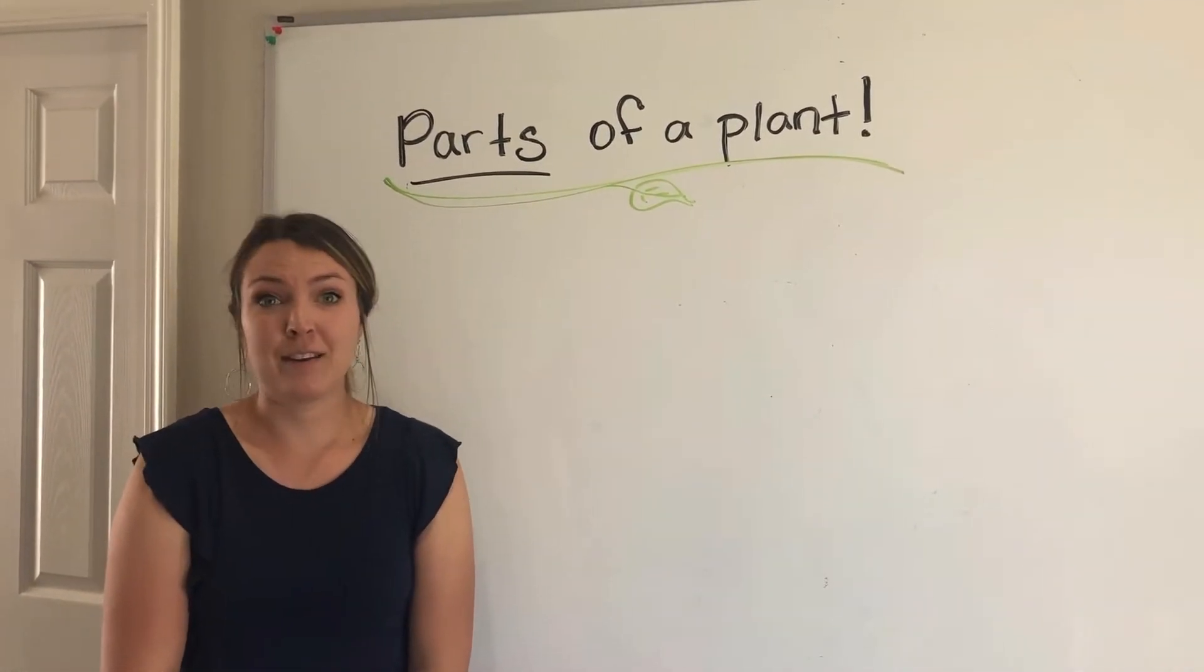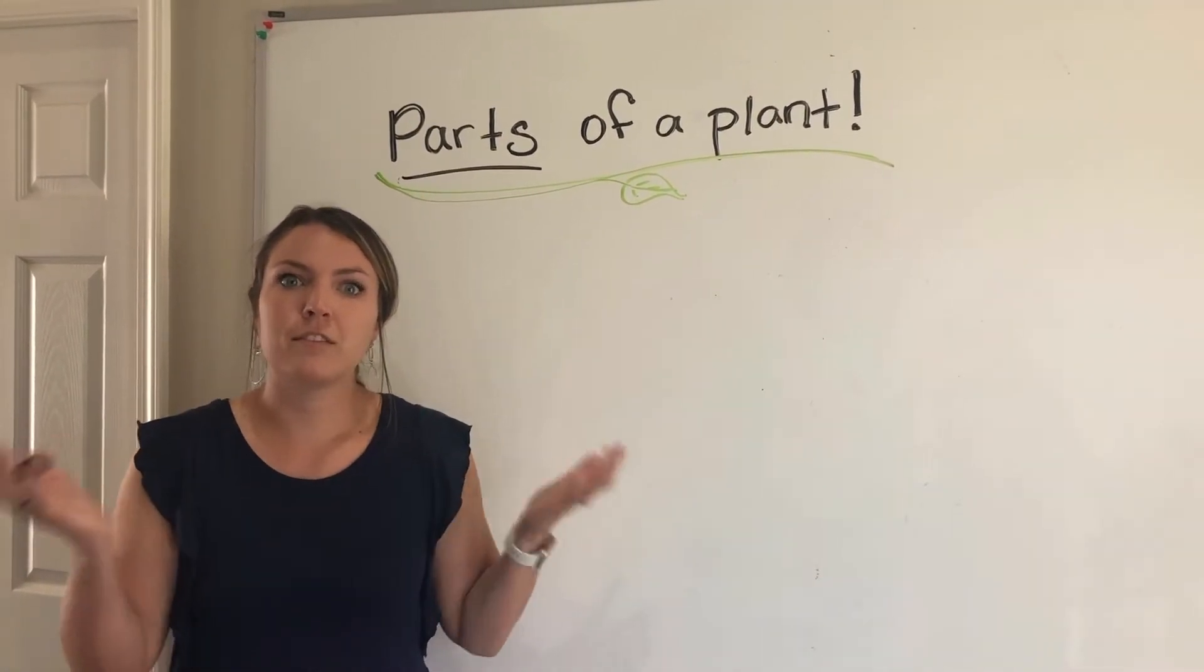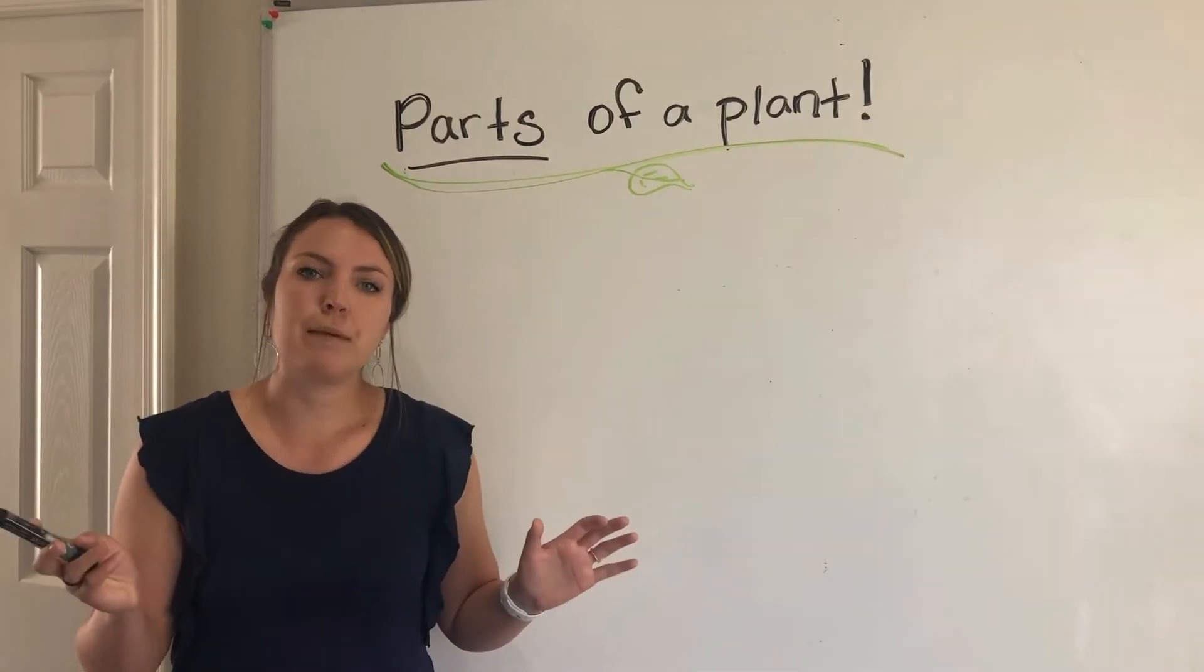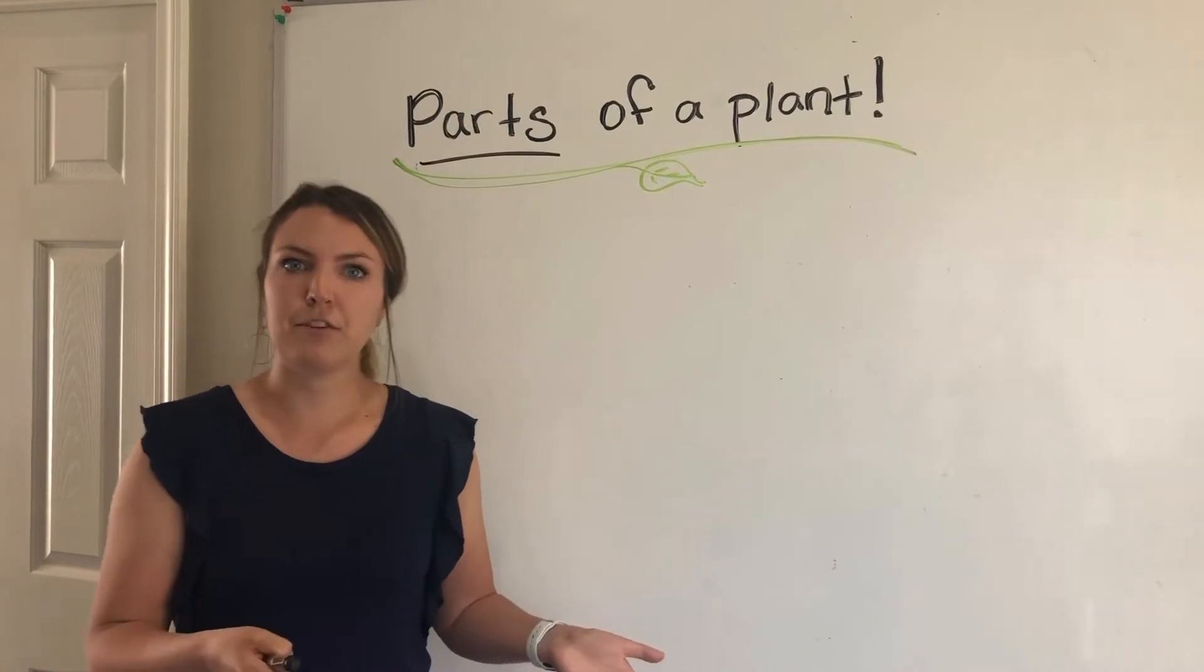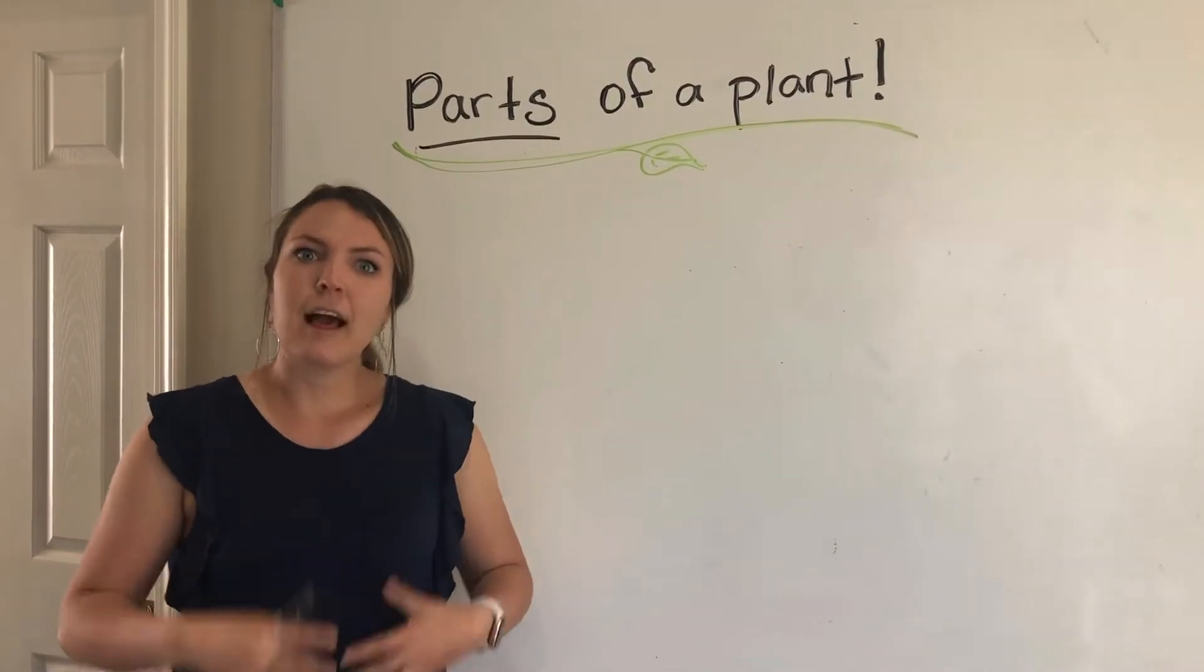Humans have parts. We have hands, we have eyes, we have mouths, and things that help us survive. So when we're looking at different plants today, I want you to think about what parts do these plants have that help them survive? Just like your hands, your eyes, your mouth, your feet, your stomachs help you survive.